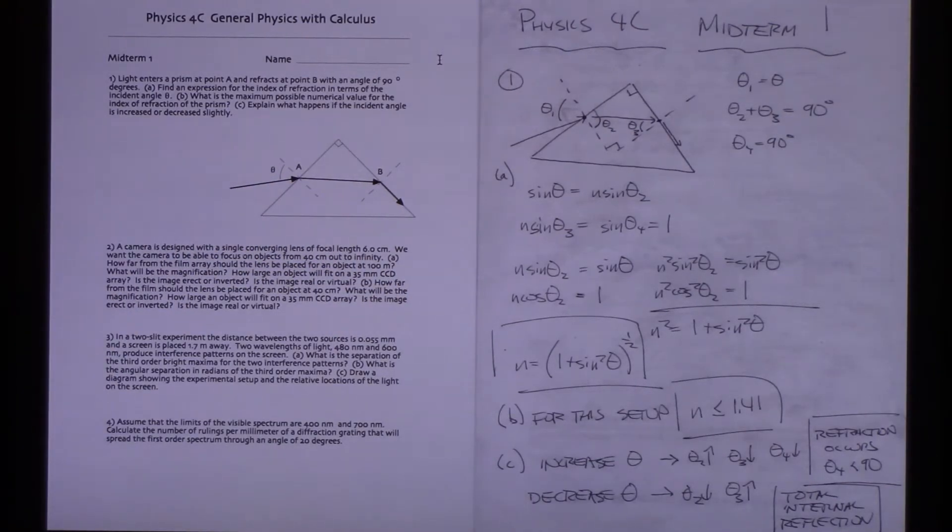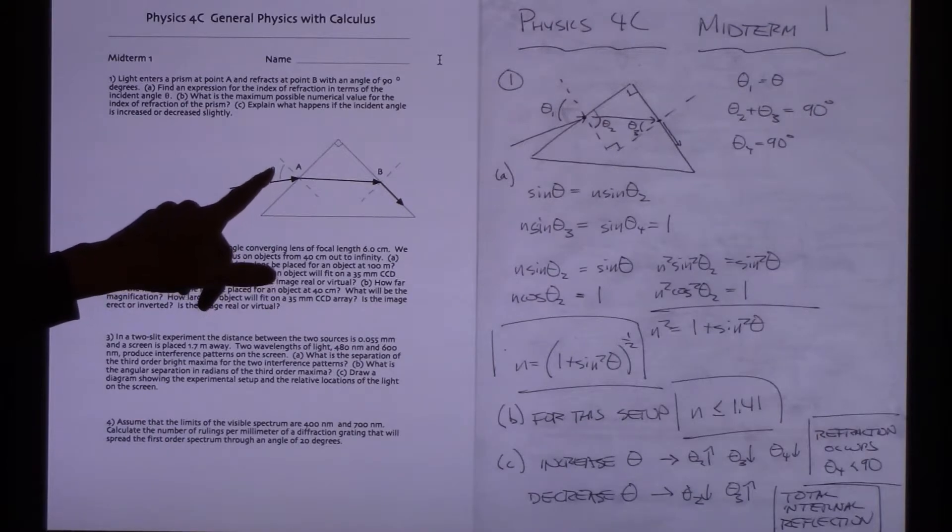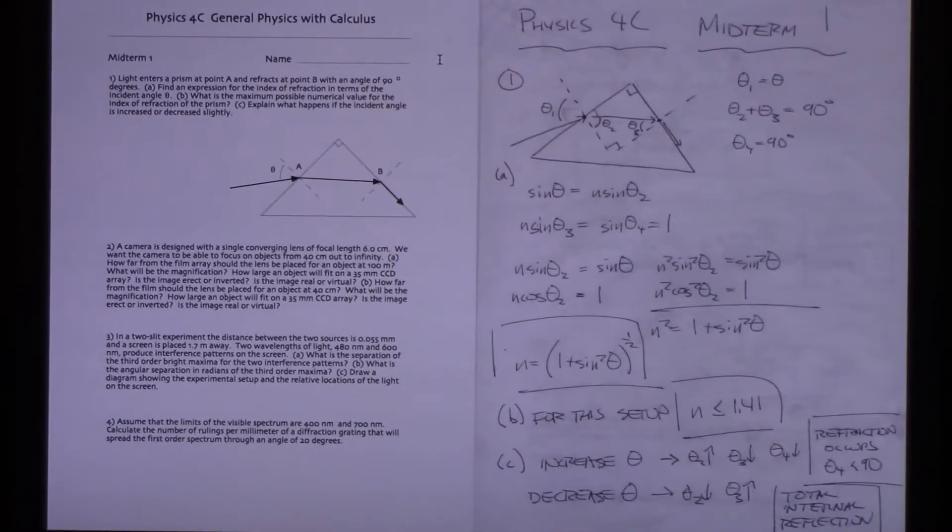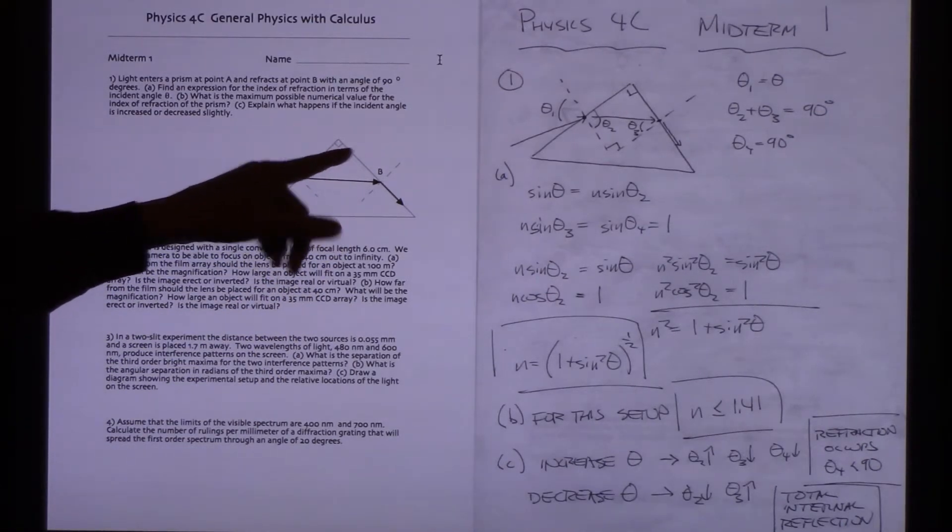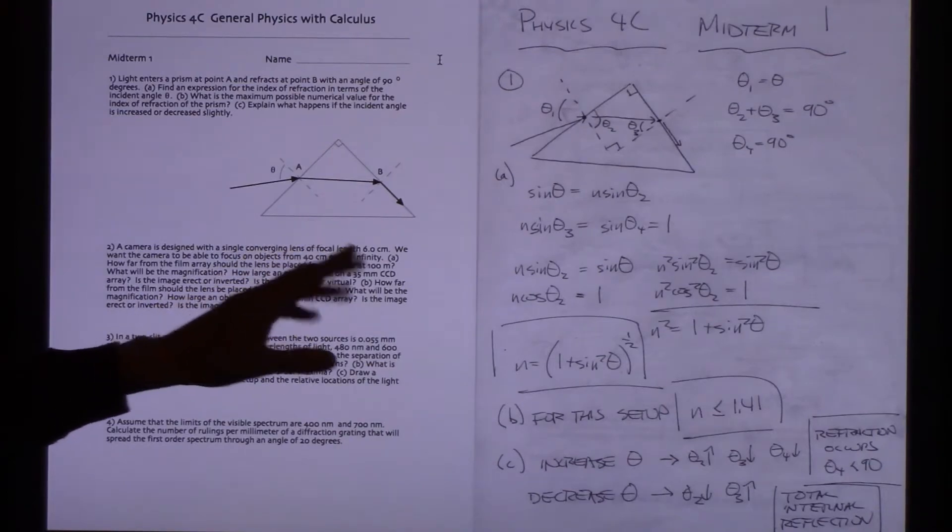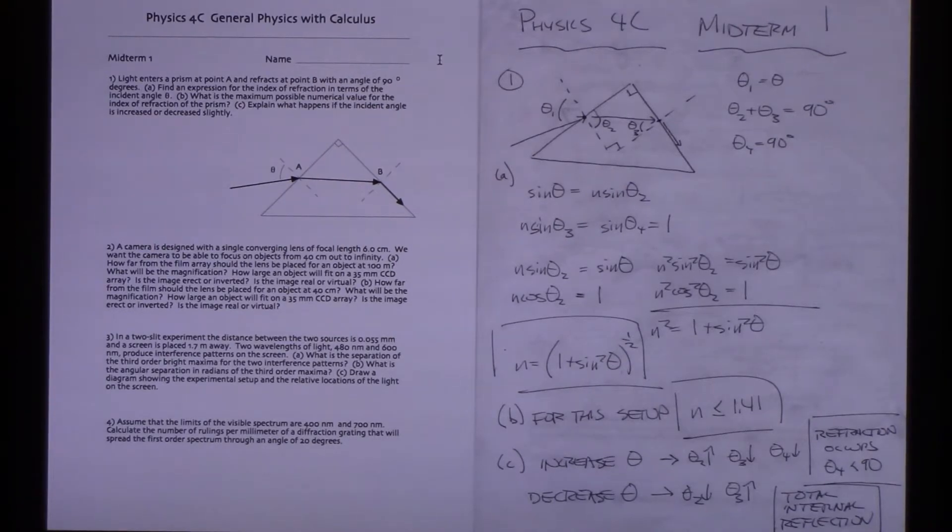For this setup, it asks us how useful is this for different ranges of index of refraction. For this particular setup, theta can't be any bigger than 90 degrees, it's going to be between 0 and 90, and that says the index of refraction would need to be between 1 and the square root of 2. So the largest that could become is 1.41. If we switch out this 90 degree angle here and make it smaller, we could use the same approach. Formula would be a little different, but we could get a formula for that, and then we could use it for other indexes.